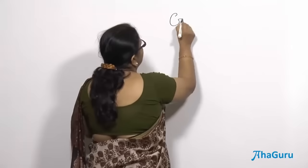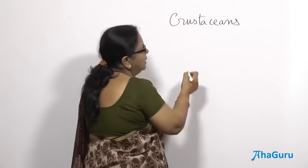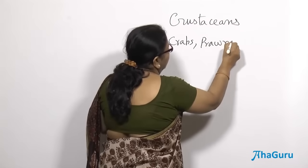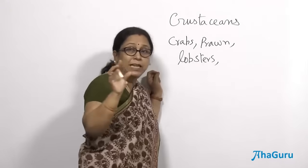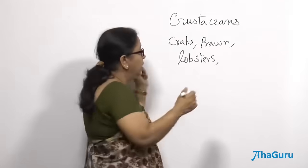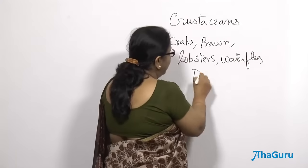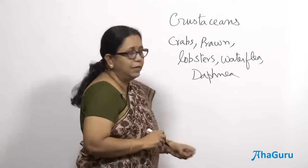Let us look into some classes of arthropoda. One of the classes is Crustacea. Crustaceans are animals like crabs, prawns, and lobsters. Certain miniature crustaceans are also part of plankton, such as water flea, cyclops, or daphnia. These kinds of animals are included in Crustacea.